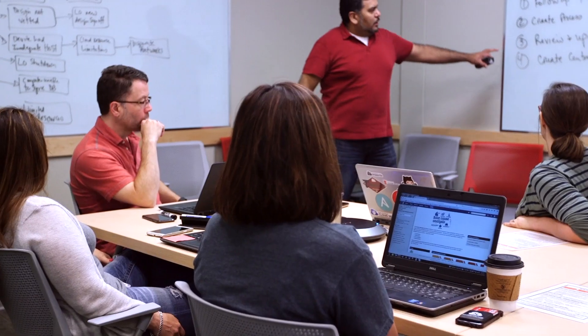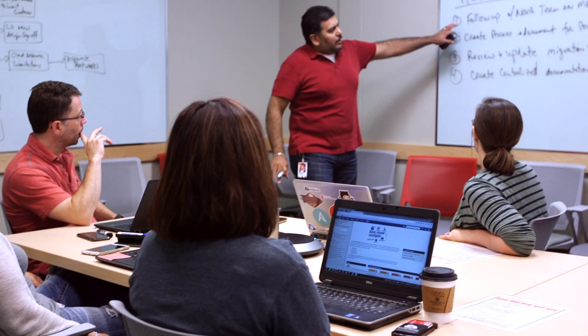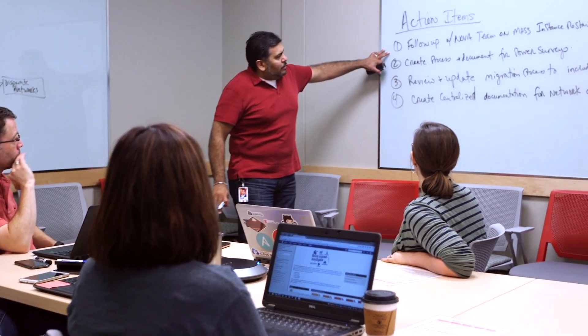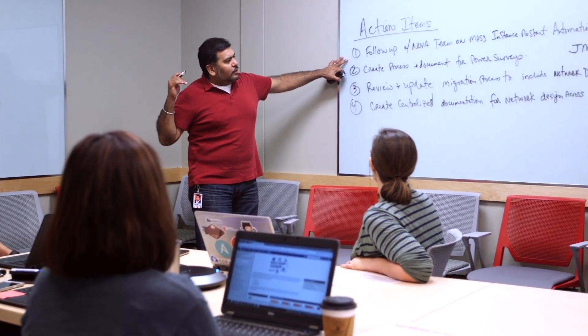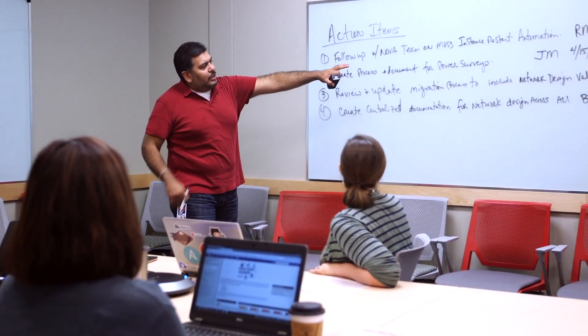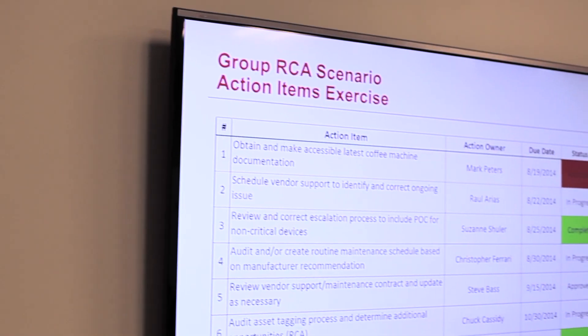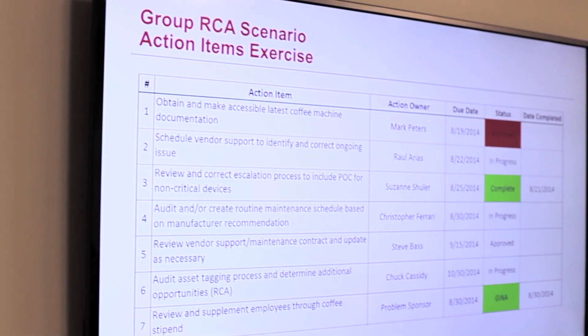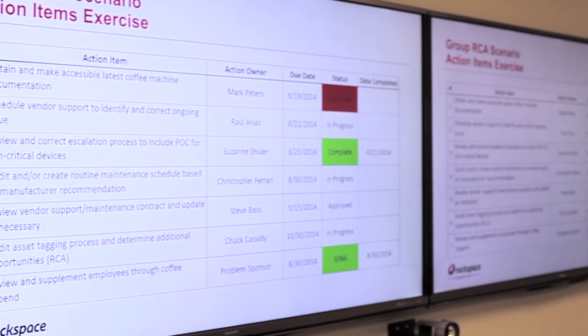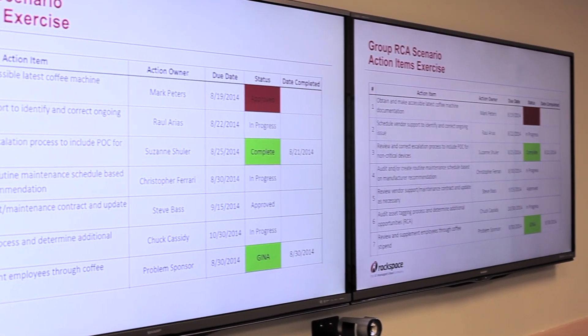Action items are, in my opinion, the most critical outcome of the RCA process. They are the items which the Rackers in that RCA believe will prevent future incidents, and that ties directly back to what's critical and important about operational discipline.